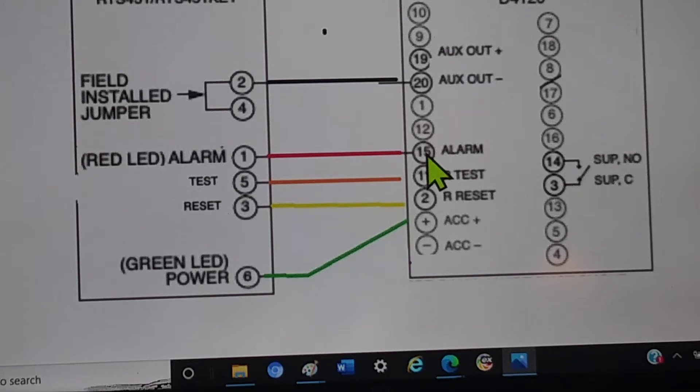When you tie the red wire 15 to 1, and you put it in an alarm, the red light will come on. The green light, if I'm not mistaken, will stay on, but the red light will come on, indicating it's an alarm.